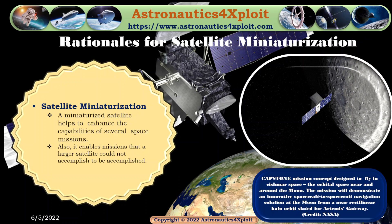A miniaturized satellite helps to enhance the capabilities of future space missions. It also enables missions that a larger satellite could not accomplish to be accomplished. This picture shows the Kapton mission concept, which was designed to fly in cislunar space — the orbital space near and around the moon. The mission will demonstrate an innovative spacecraft-to-spacecraft navigation solution at the moon from a near-rectilinear halo orbit, slated for Artemis's Gateway.